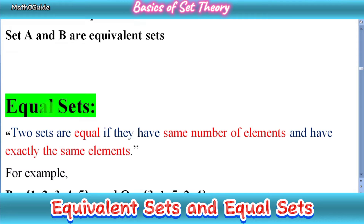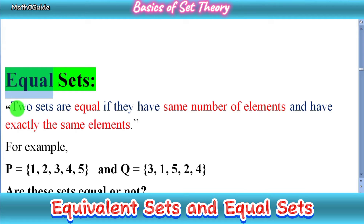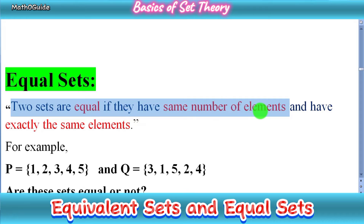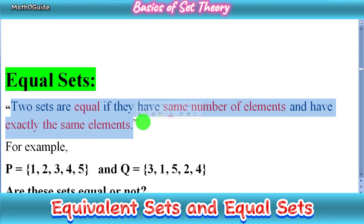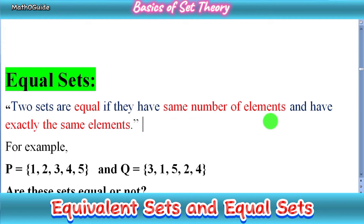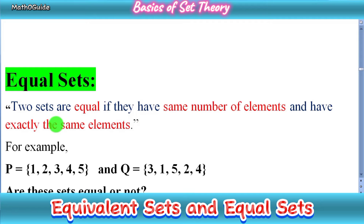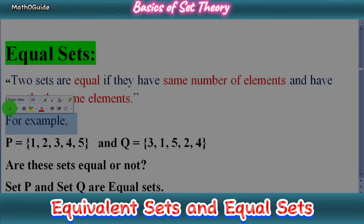Now we move to equal sets. As you can see by the name, equal means exactly the same. Two sets are called equal if they satisfy two conditions: first, they should have the same number of elements, and second, they should have exactly the same elements. In equivalent sets we have only one condition — same number of elements — but in equal sets we need both conditions.